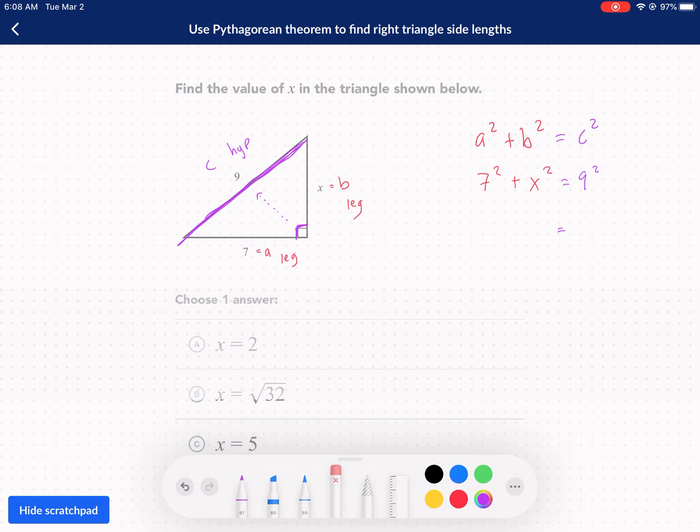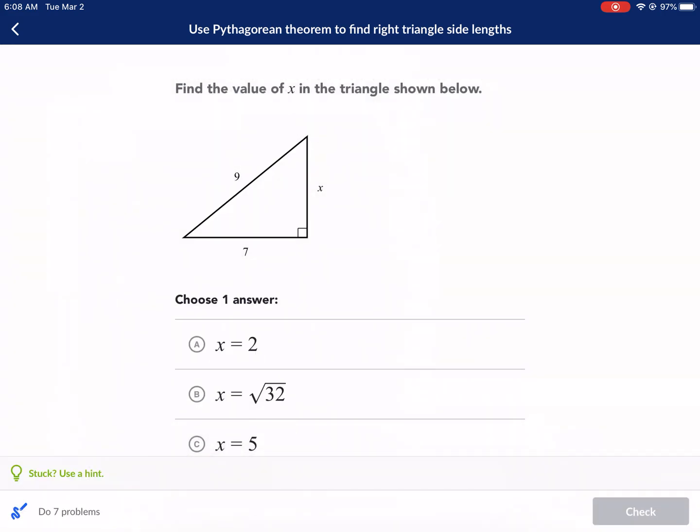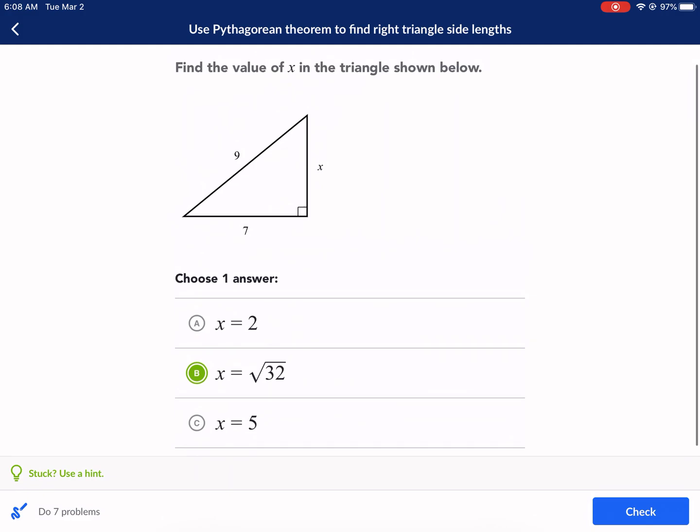We have 81 equals 7 squared plus x squared. Sorry, that's 49. That's what I meant to write. So we're going to subtract 49 from both sides. Minus 49, we get x squared minus 49 equals, what is that, 32? Yep, 32, and we take the square root of that, and we get x equals the square root of 32. So we have one answer here, x equals the square root of 32, and that's what I was looking for.